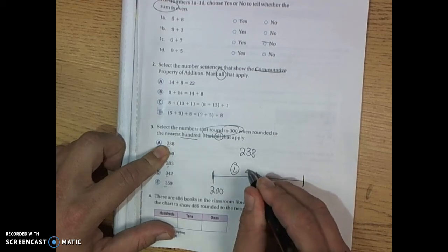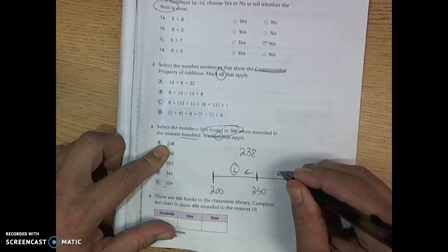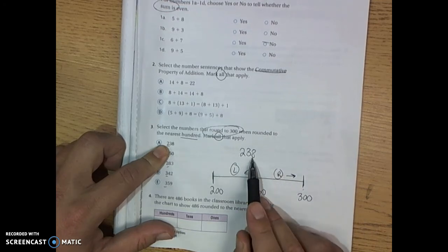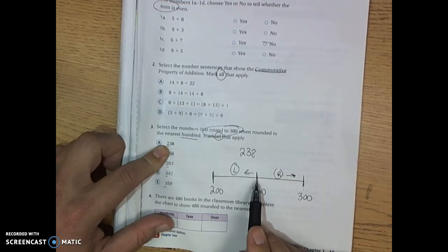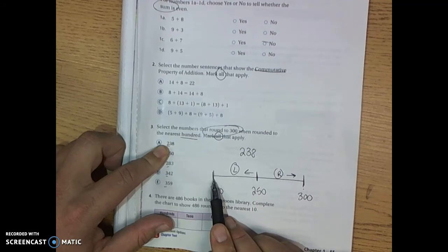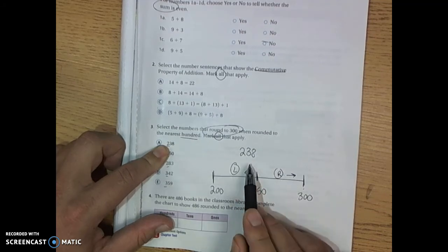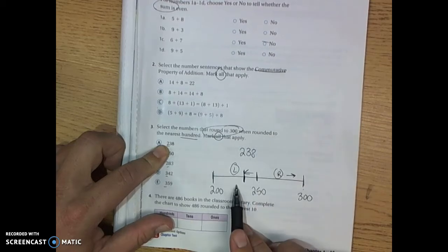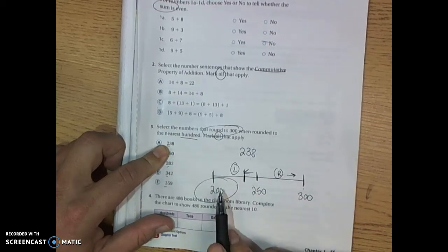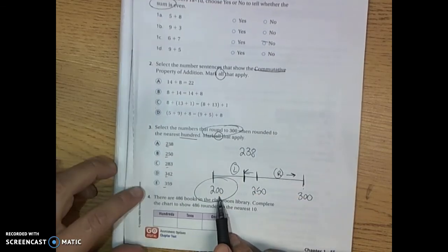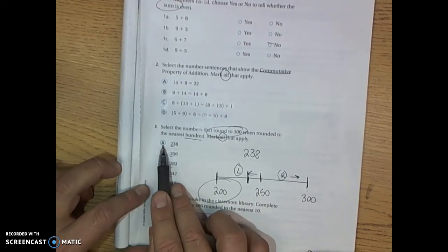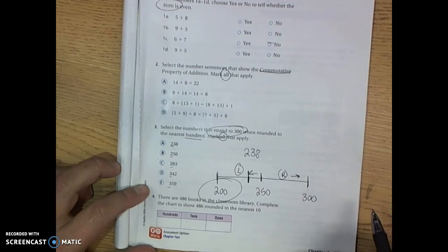From there we said 238. Is that to the left of 250 or to the right of 250? If it's to the right of 250 the number gets rounded up to 300. If it's to the left of 250 then it gets rounded down to 200. 238 is like right here. That's to the left of 250. So the final answer, this would be rounded to 200 and so you would not mark this bubble because this one does not round to 300.